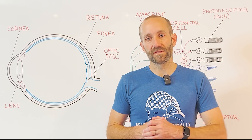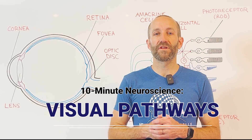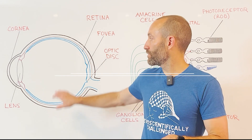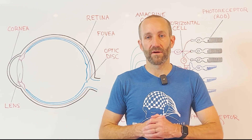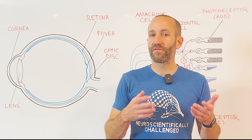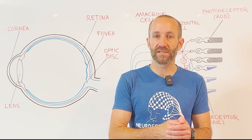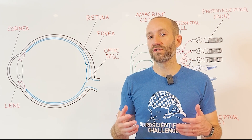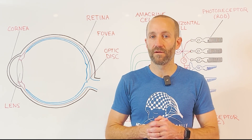Hi everyone, welcome to 10 Minute Neuroscience. In this installment, I'll be covering the pathway of visual information through the brain, starting with the eye and ending with the visual cortex and surrounding areas. This will be a very general overview, focusing more on the pathway of visual information than on the processing of that information, but this should serve as a good introduction to the way visual information travels from the eye through the brain.